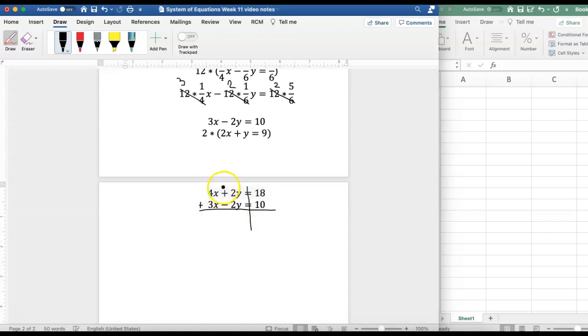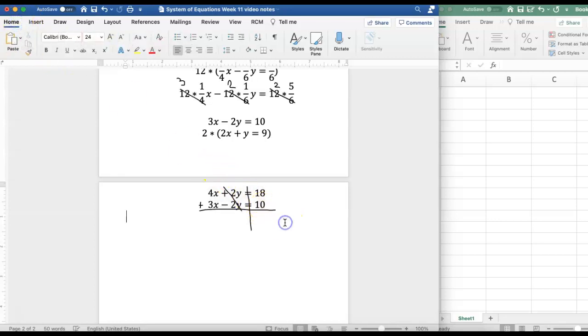All right on the left hand side 2y minus 2y is 0 and then I have 4x plus 3x which gives me 7x and I don't want to draw that for you because I think that will get even more messy so we're just gonna put this in here. So the y's are gone and then on the left hand side 3 plus 4 gives me 7 on the right hand side 18 plus 10 gives me 28.